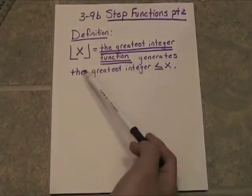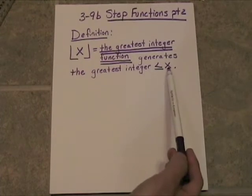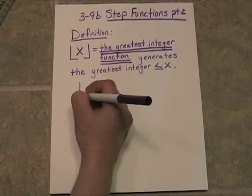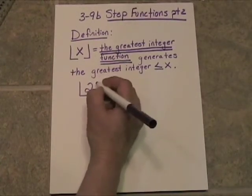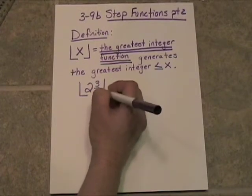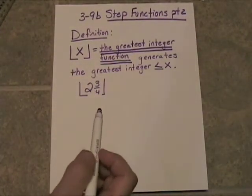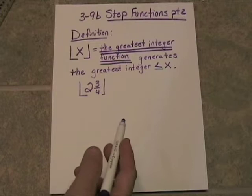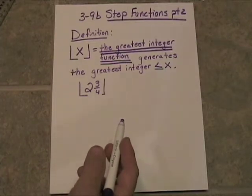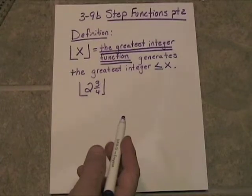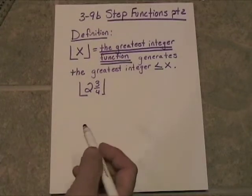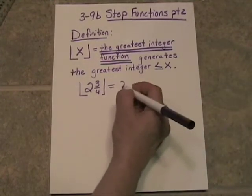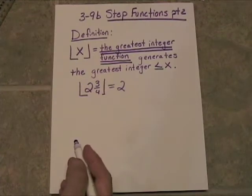What it does is it generates the greatest integer that is less than or equal to x. Let's take a look at a couple examples. Let's say we have the greatest integer function of 2¾. What is the greatest integer that is less than or equal to 2¾? We want to go down to the closest we can get, but still be smaller than 2¾, and we have to be an integer. So we're just going to move down — the closest integer that's smaller is 2.